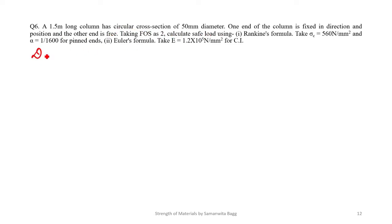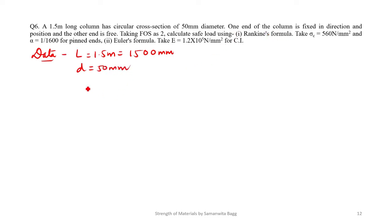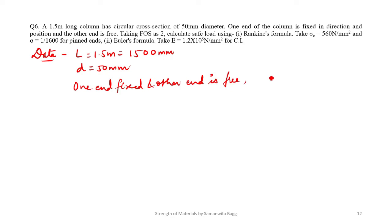A 1.5 meter long column has a circular cross-section of 50 mm diameter. The value of L is given as 1.5 meter, that is 1500 mm. The diameter D is given as 50 mm. One end of the column is fixed in direction and position and the other is free.